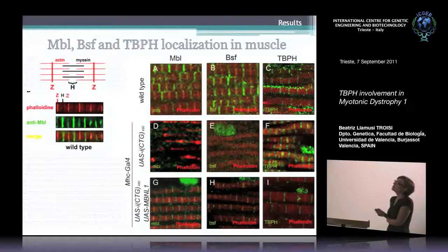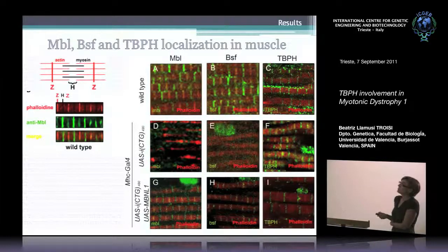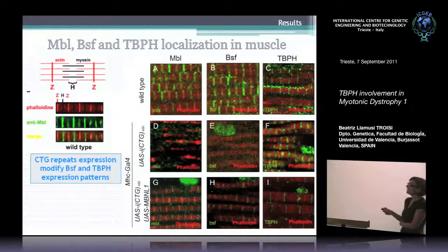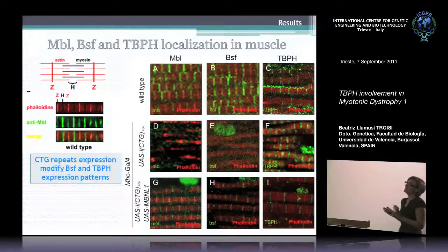Regarding TBPH, it was also expressed in sarcomeric bands — with very mild expression in nuclei, same as MBL — but was only detectable in H bands. However, when CTGs were expressed, we obtained an apparent overexpression of TBPH, detected not only in H bands but also in Z bands and in nuclei. In both cases — BSF and TBPH — the nuclear expression was not located to the foci but was dispersed, suggesting they are not interacting directly with the CTG repeats.